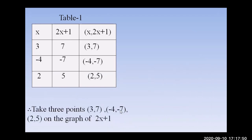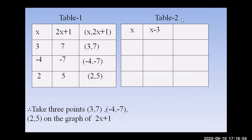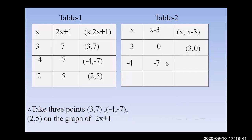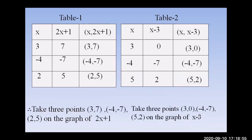Table 2: x and x minus 3. Take x equals 3: 3 minus 3 equals 0, so (3, 0). Take x equals minus 4: minus 4 minus 3 equals minus 7, so (minus 4, minus 7). Take x equals 5: 5 minus 3 equals 2, so (5, 2). These three points will be plotted for the graph of x minus 3.